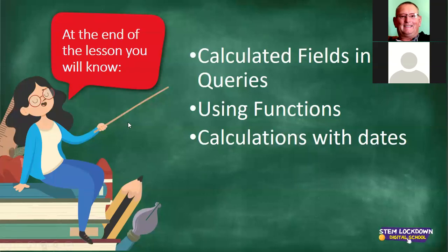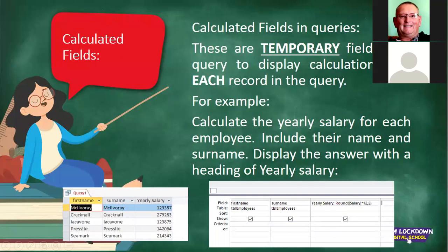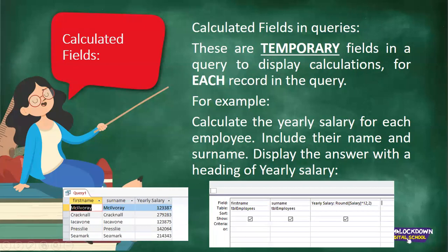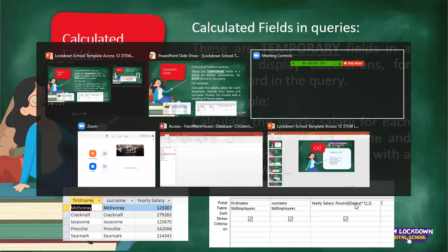We're continuing with our PowerPoint. Let's take a look at what calculated fields are. In general, queries are criteria that we set on a table. Calculated fields are like temporary fields in a query to display calculations for each record. There's a first name, a surname, and a yearly salary. I took the salary field and multiplied it by 12. Let's look at that in Access.